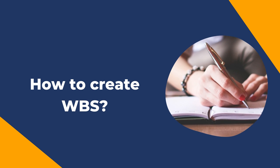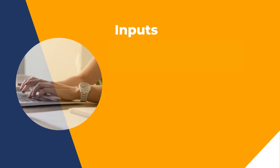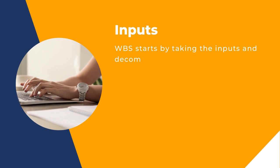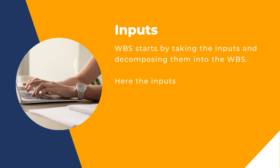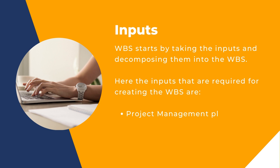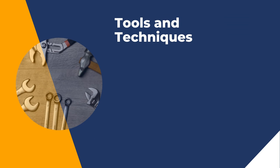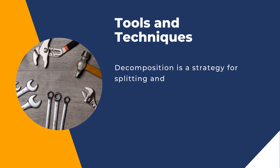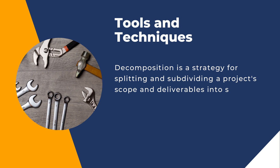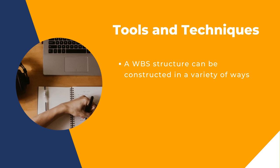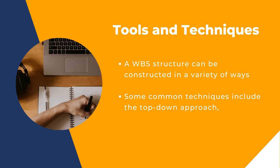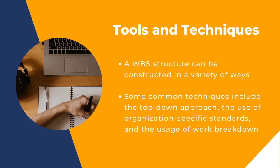Now we will try to understand how to create WBS. Creating a work breakdown structure requires few inputs through which we can create a WBS. WBS starts by taking the inputs and decomposing them. The inputs required for creating the WBS are the project management plan, project documents, and other factors such as enterprise factors and organizational assets. Decomposition is a strategy for splitting and subdividing a project scope and deliverables into smaller, more manageable chunks. Common techniques include the top-down approach, the use of organization-specific standards, and the usage of work breakdown structure templates.